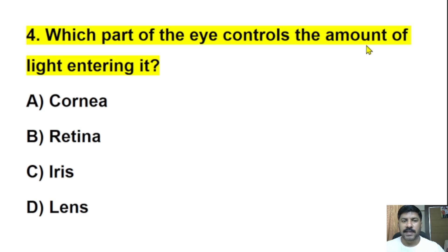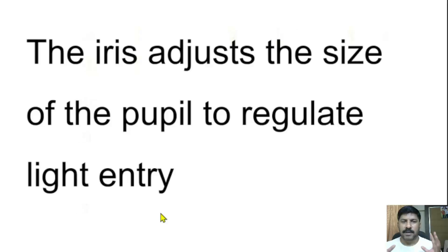Fourth question: Which part of the eye controls the amount of light entering it? This is a tricky question, so you need to answer very carefully. Options: cornea, retina, iris, lens. The correct answer here is iris, because iris has the muscle structures that control pupil size. According to the muscle function, the pupil will contract or dilate. That is regulated by the iris, the muscles of iris.